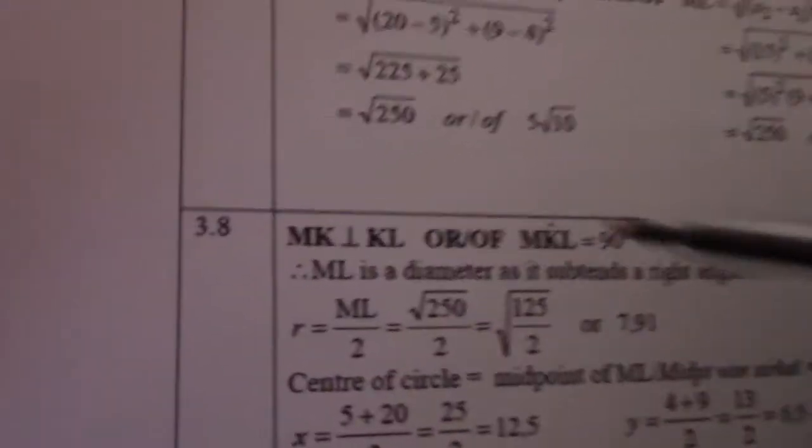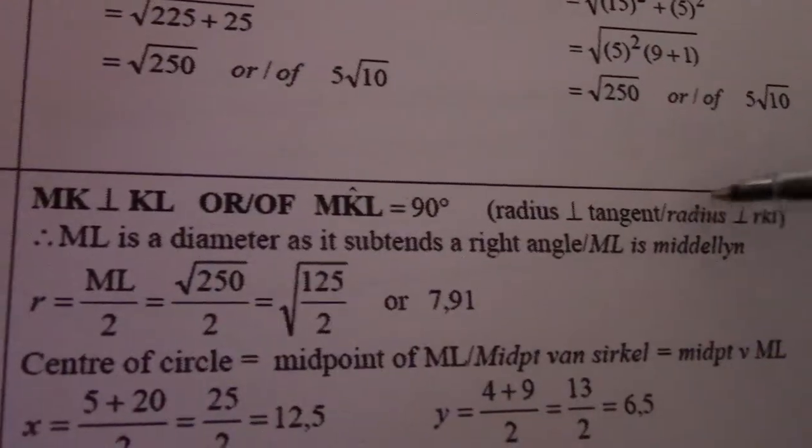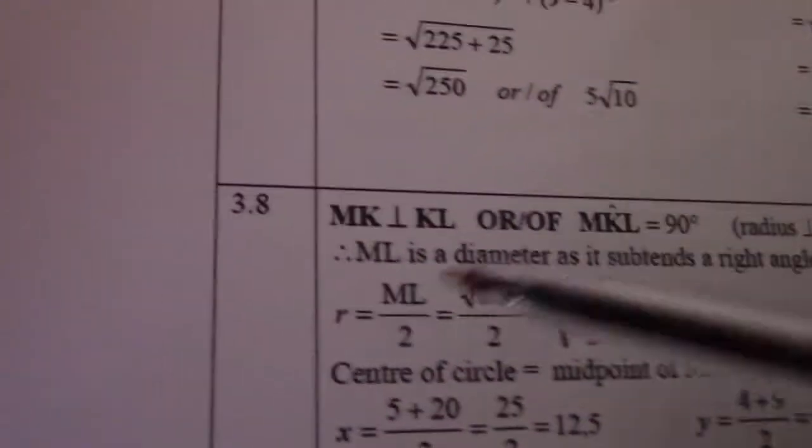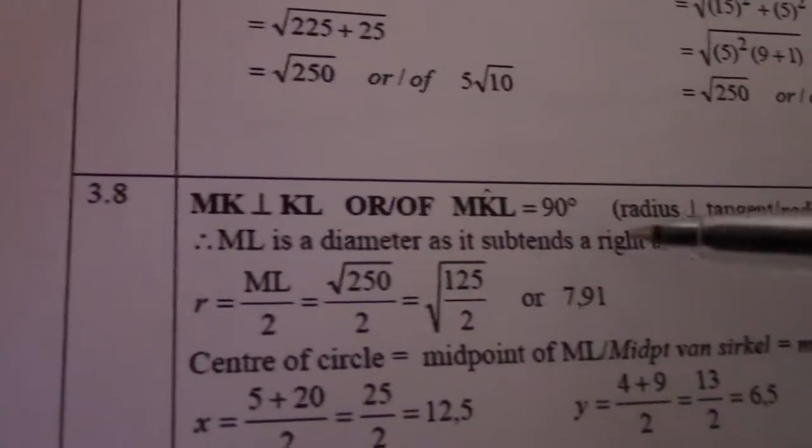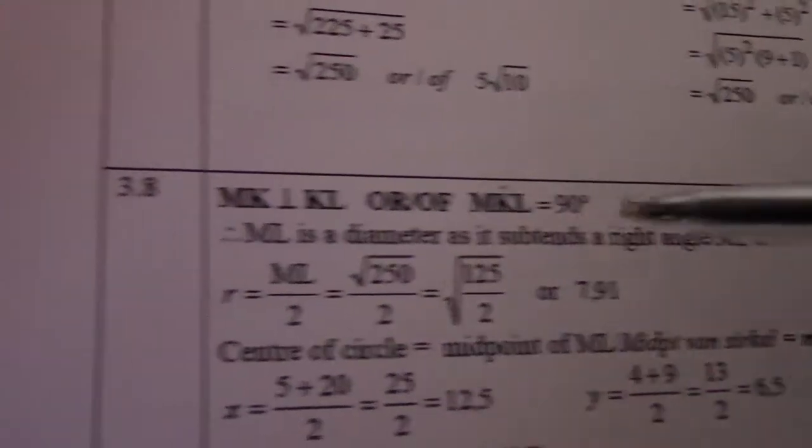Look at MK parallel to KL. Radius perpendicular to tangent. So ML is a diameter as it subtends the right angle.